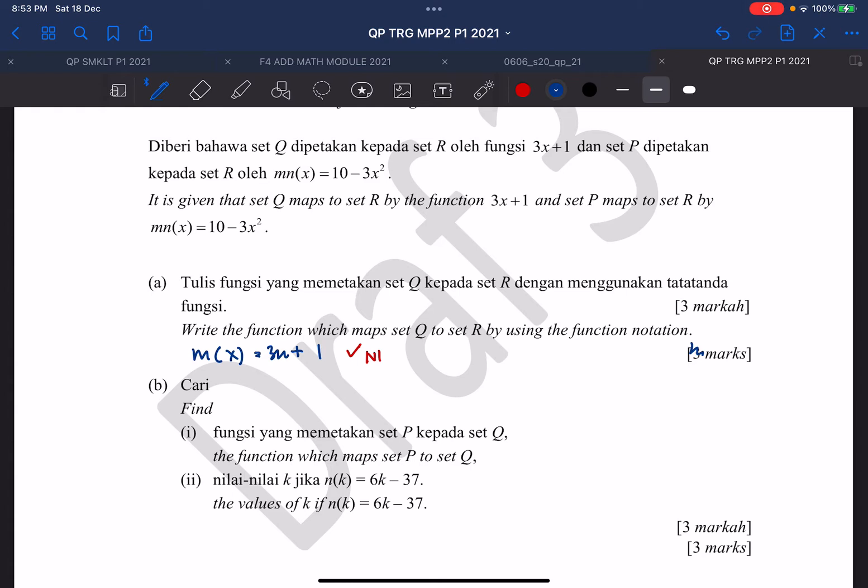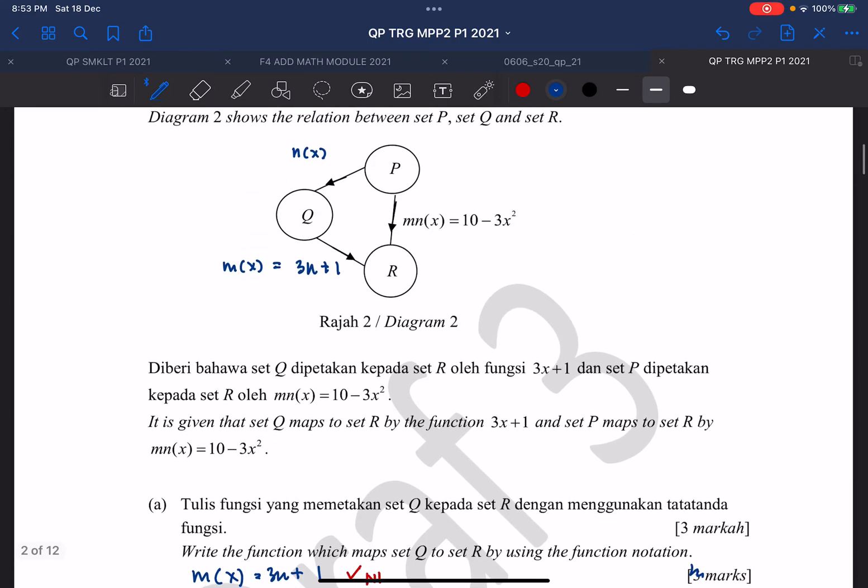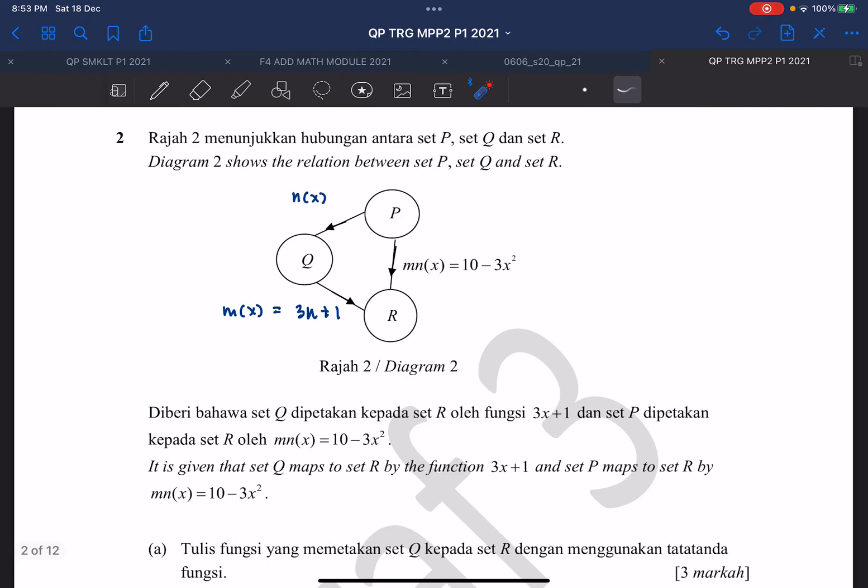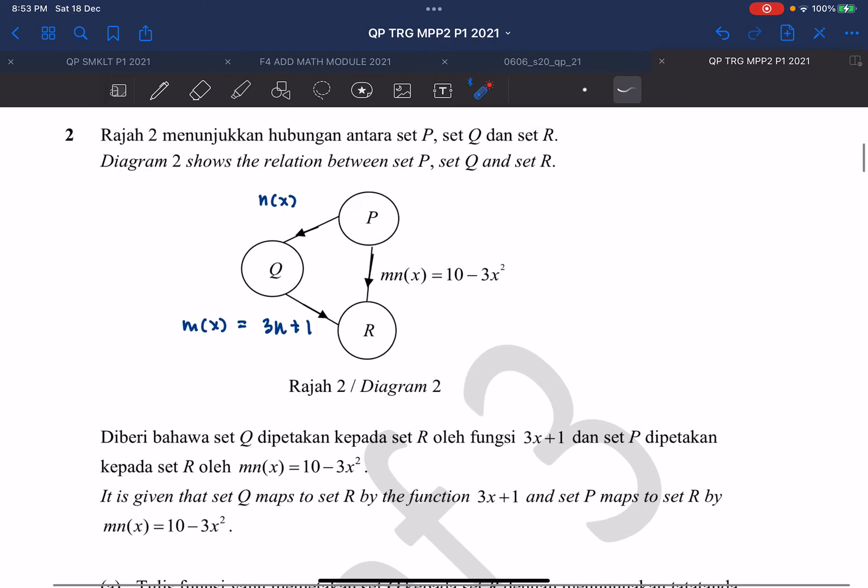So for question B1, they want to find the function which maps P to Q. So from P to Q is actually function N. So it's given that MN, function composite function MN, and we have function M. We need to find function MN now. So the first step.